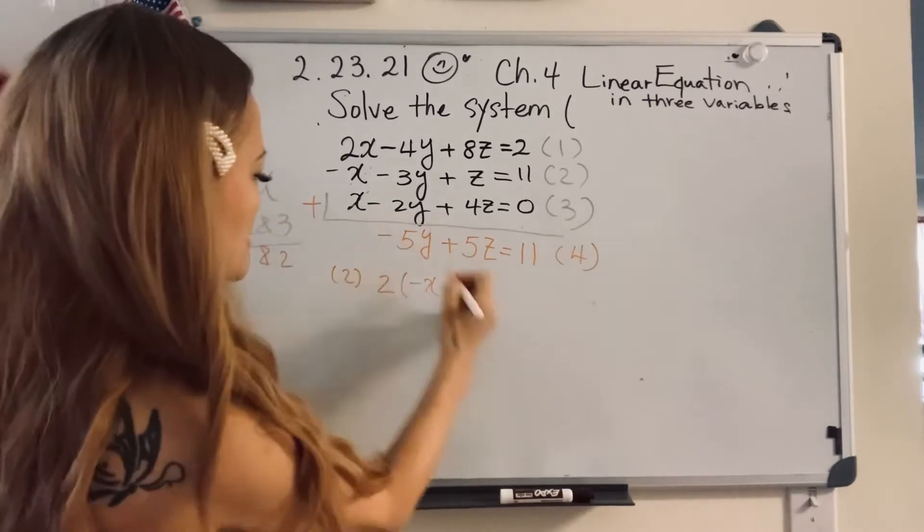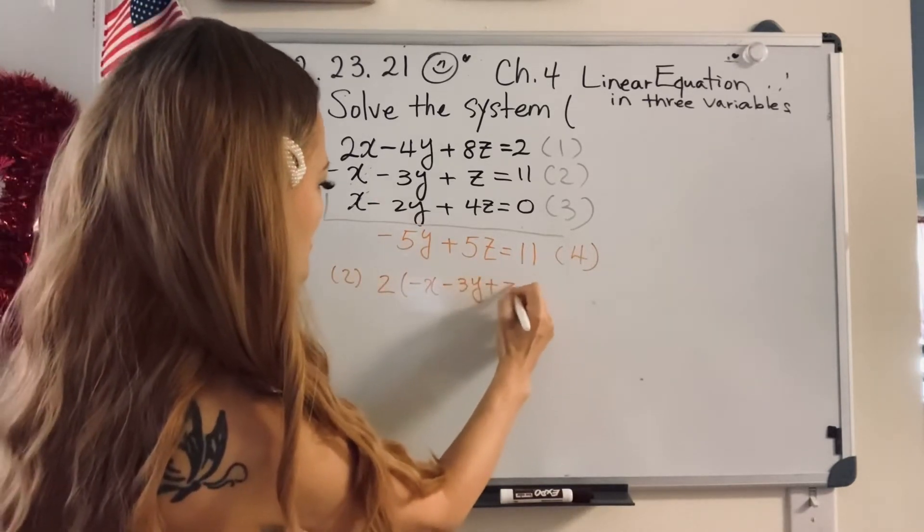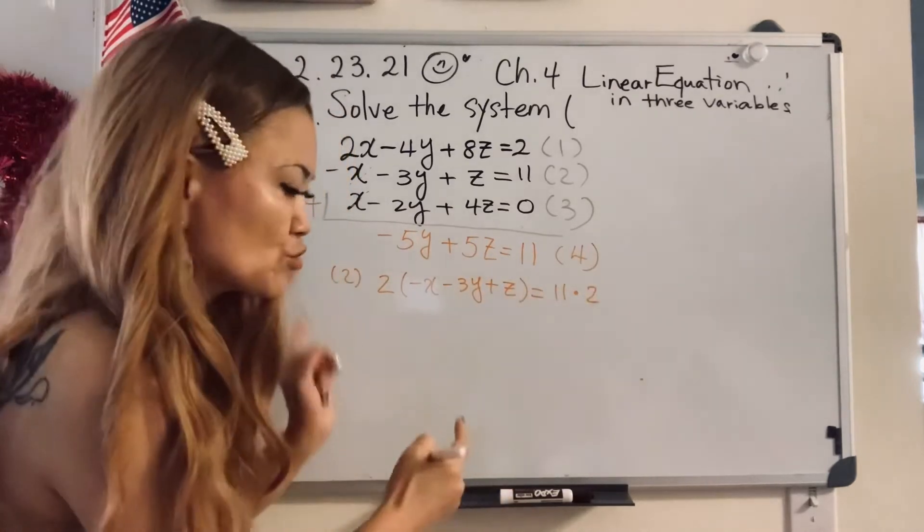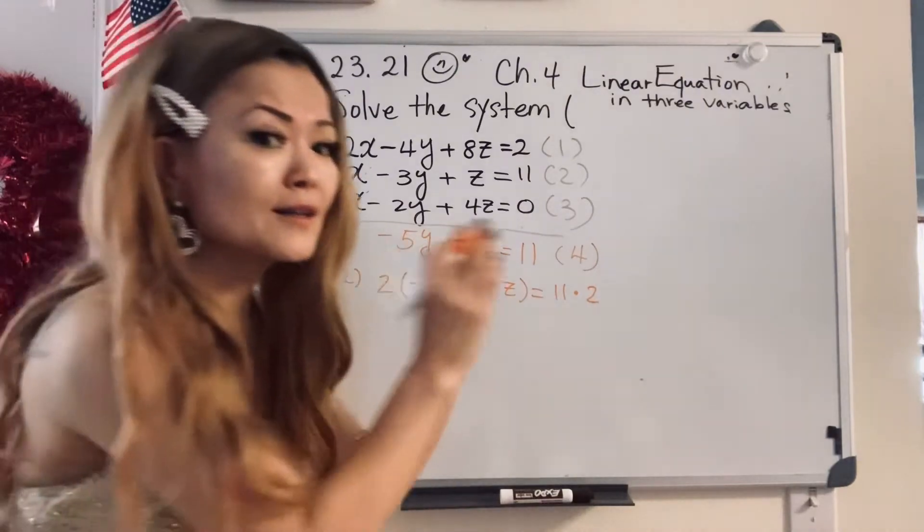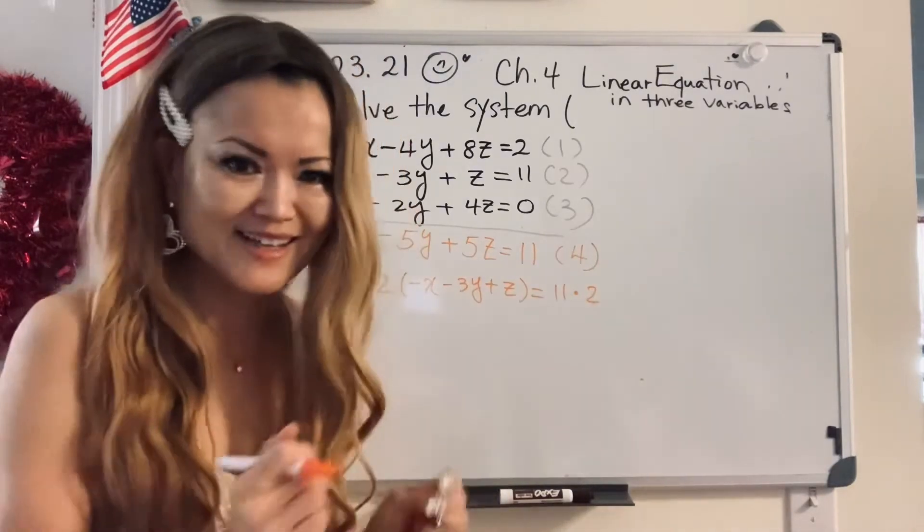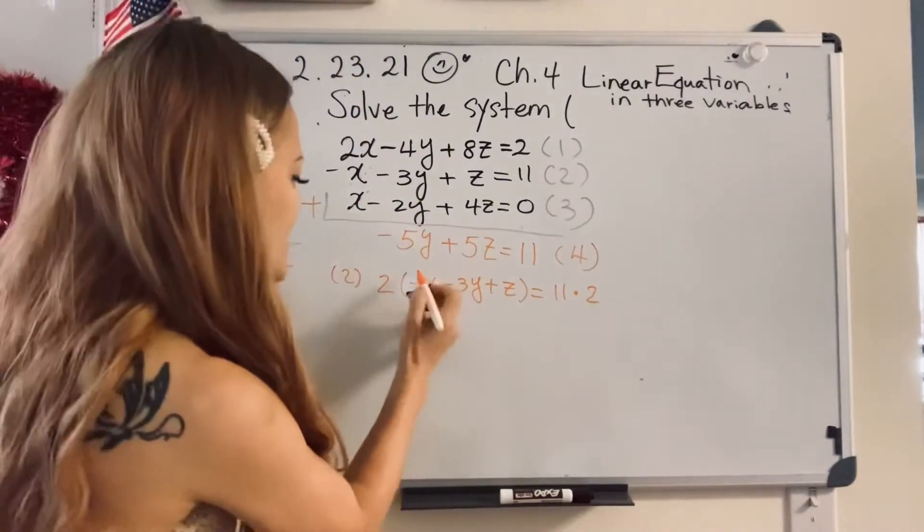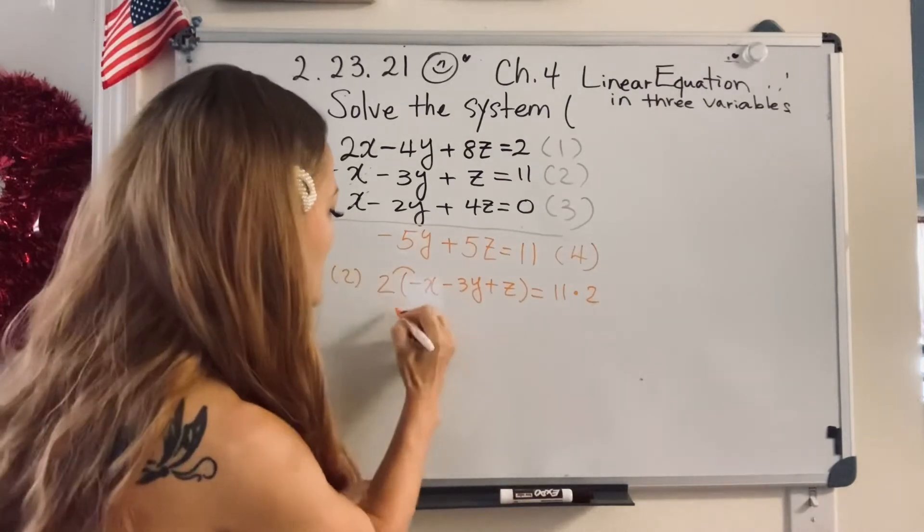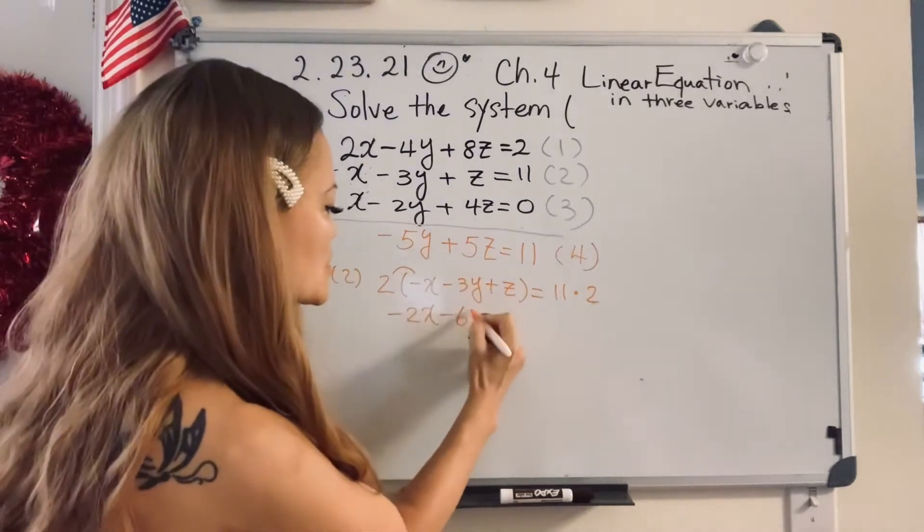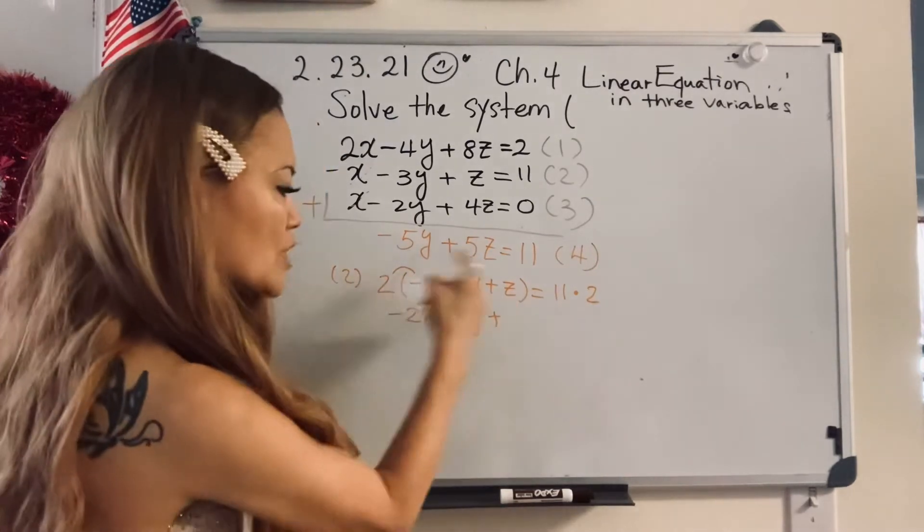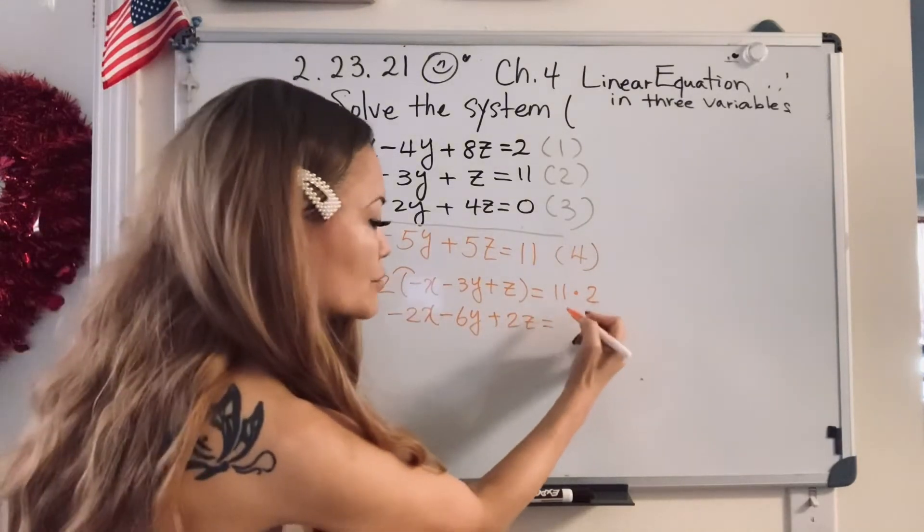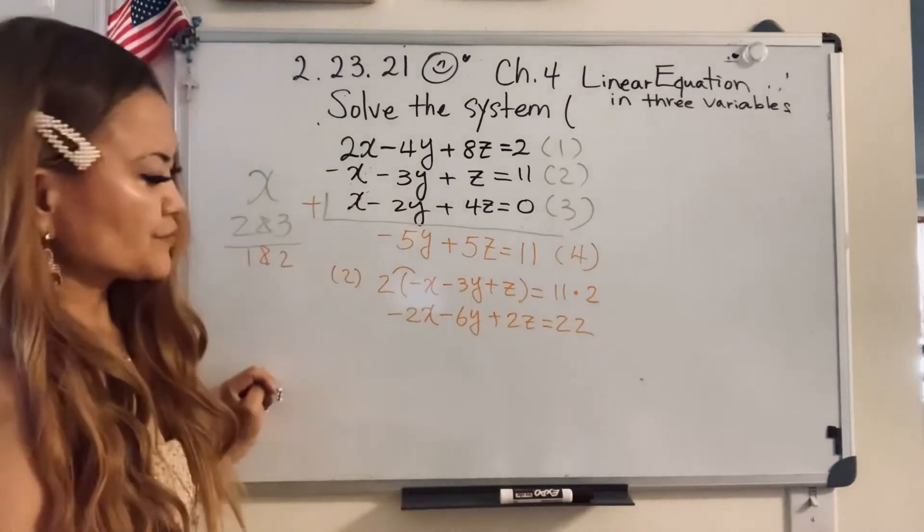Minus x, write down. Minus three y plus z equals 11 times two. Two times two, not only you. Right side two, me too. Times two because equal, right? Okay, so let's distribute properly. Negative two x minus two times three, six y, plus two times z, two z equal. 11 times two, 22. Ta-da!